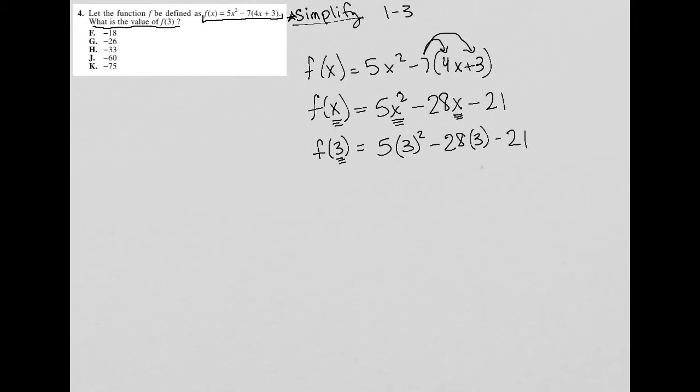So let's continue simplifying this. So 3 squared is 9. 5 times 9 is 45. So this becomes 45 - 28(3). Don't forget, you do have a calculator.